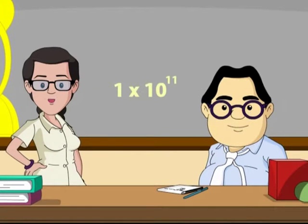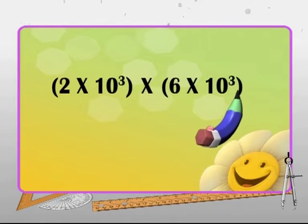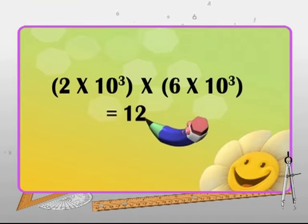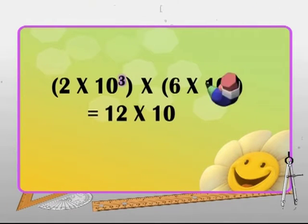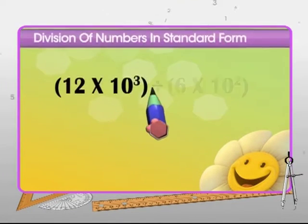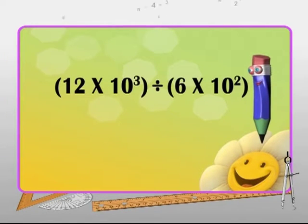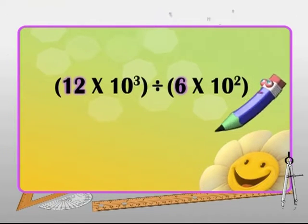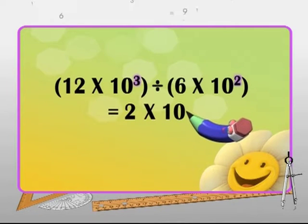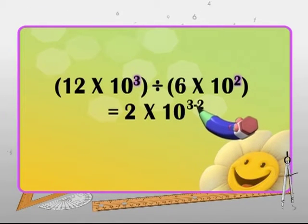Let's enter the virtual world to learn how to carry out operations on these numbers. To multiply two such numbers, the coefficients of the two numbers are multiplied to get the resultant coefficient, whereas the exponents are added to get the final exponent. To divide, the coefficient of the dividend is divided by the coefficient of the divisor to get the final coefficient, and the exponent of the divisor is subtracted from that of the dividend to get the final exponent.